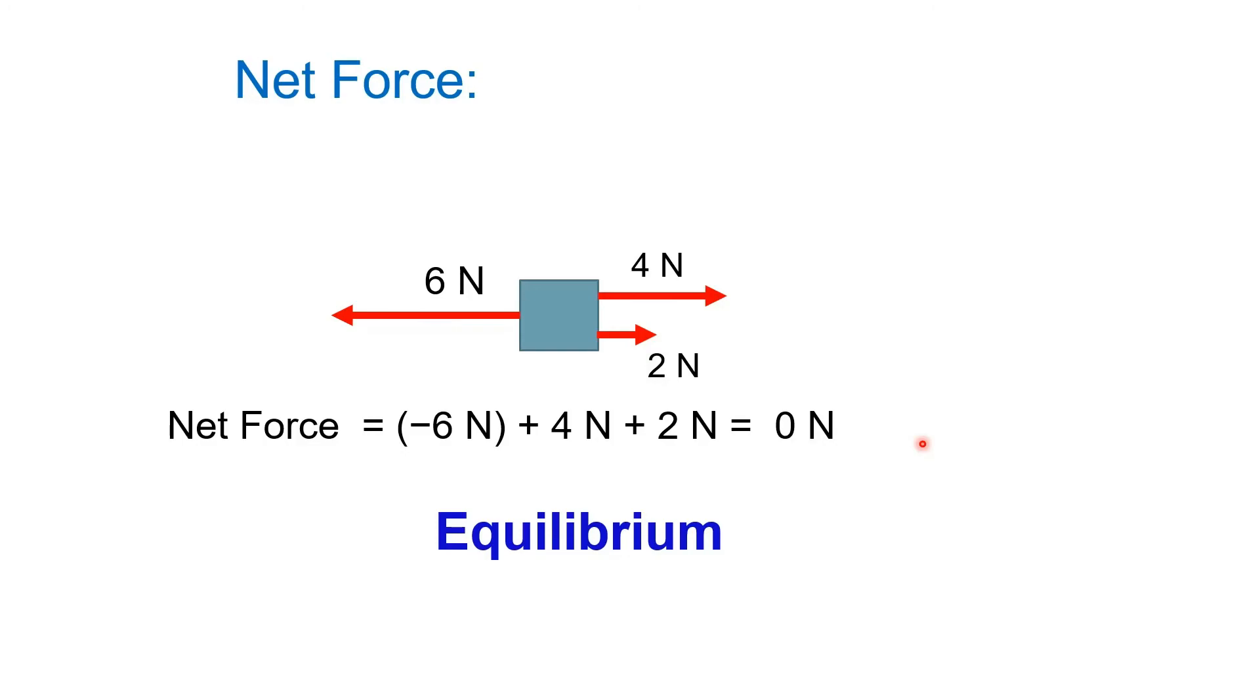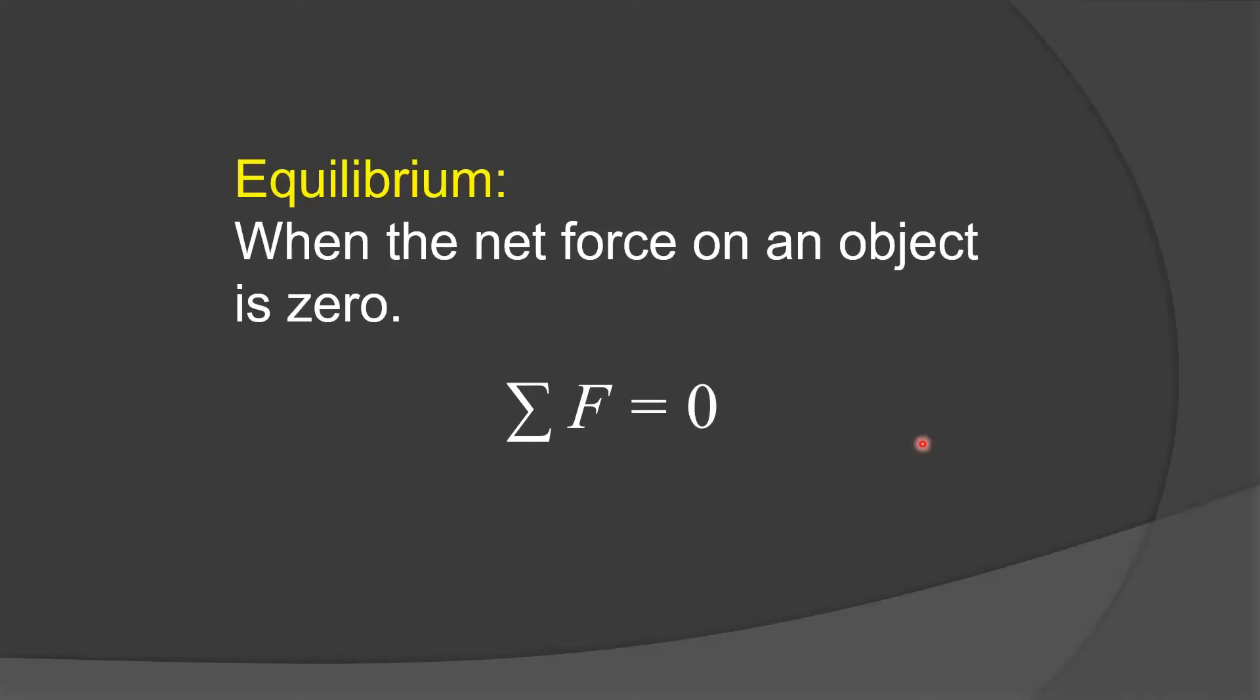So let's go ahead and define equilibrium. It's defined as when the net force on an object is zero. This is the summation symbol. So if we add all the forces, that's what this is saying, and they equal zero, then that's called equilibrium.